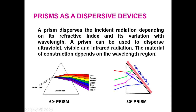The material of construction depends upon the wavelength region we want to separate. For ultraviolet, we need a different material such as quartz; for visible range, we need glass — quartz also works for visible. For infrared radiation, we need different kinds of materials such as sodium chloride and other salts, made into a prismatic shape.